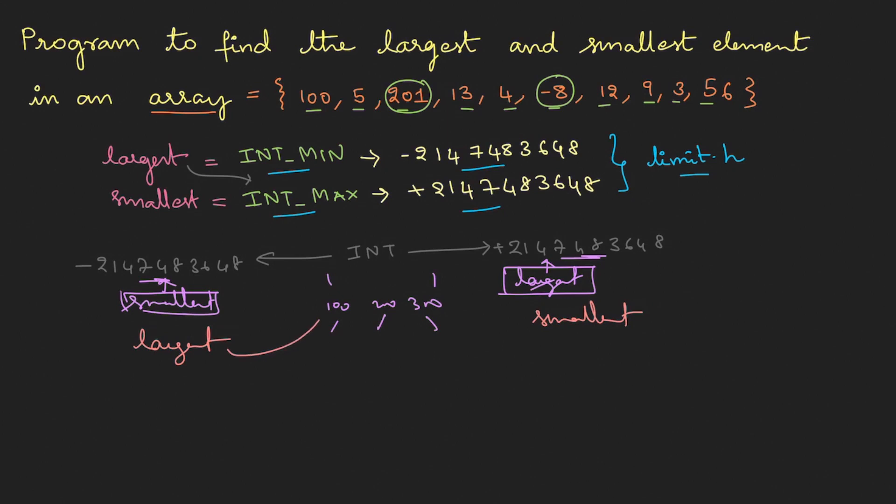Now when we compare this with any element, we obviously know 100 is greater than this value, so immediately the largest will be pointed to here and the smallest will come back somewhere here. Now these two can keep moving left and right and you can find out the actual minimum and the largest number.